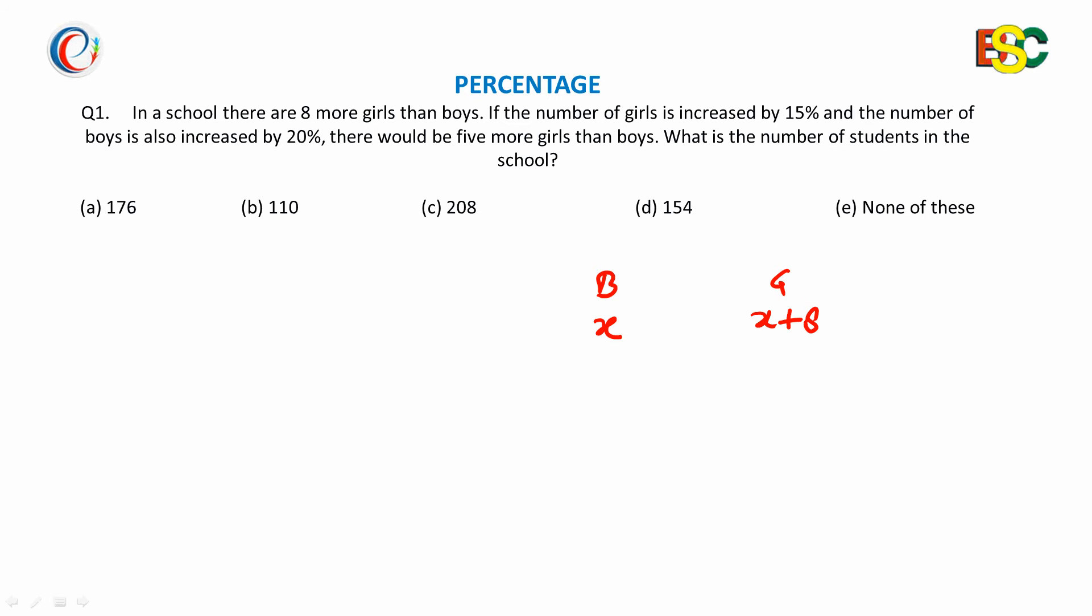Now we see the number of girls increased by 15%. This means it will become 1.15 times (x + 8). And the number of boys also increased by 20%, which means it will become 1.2x.